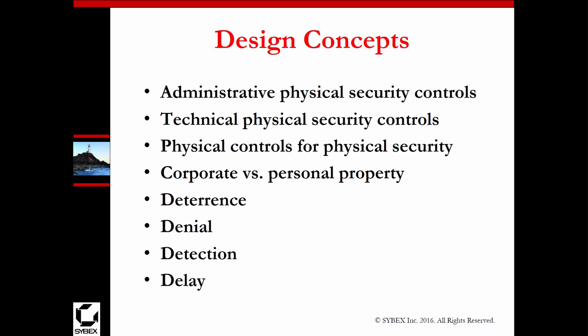The basic concepts are administrative physical security controls — you want to be able to control and administer them. You're going to have both administrative/managerial and technical controls, and part of those controls may also be physical controls. You may have to look at different types of property — corporate versus personal — when talking about design concepts for controls. Think about deterrence versus denial versus detection versus delay versus costs. You may want to deny access to your facility, but the cost may be too high, so maybe you try to deter and delay instead.